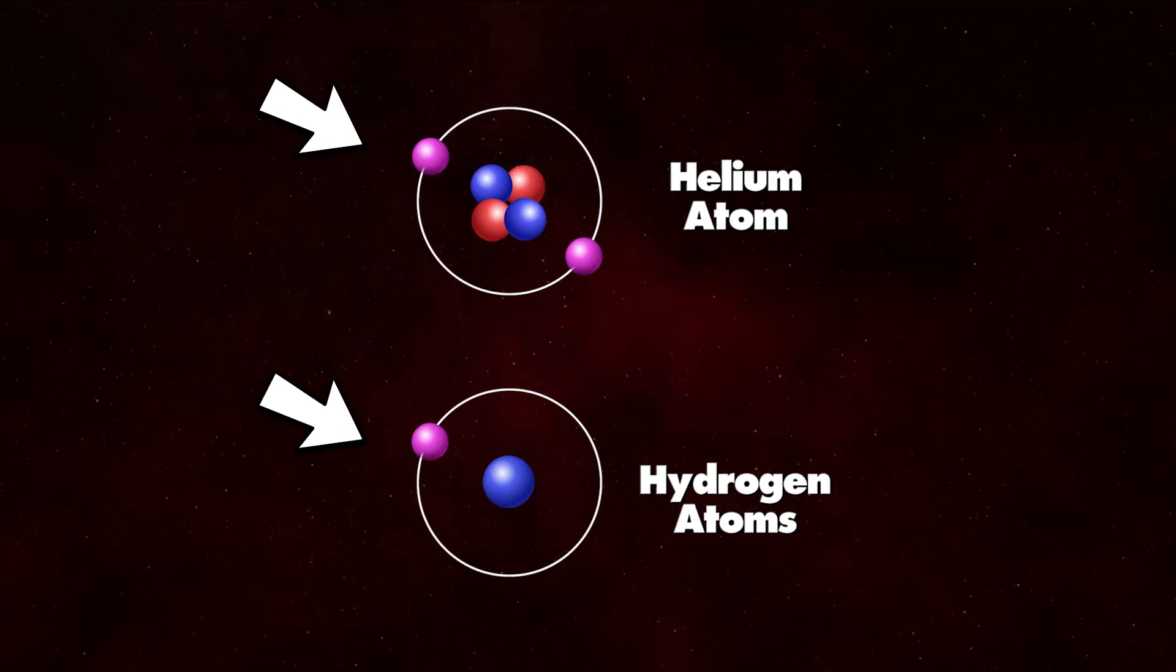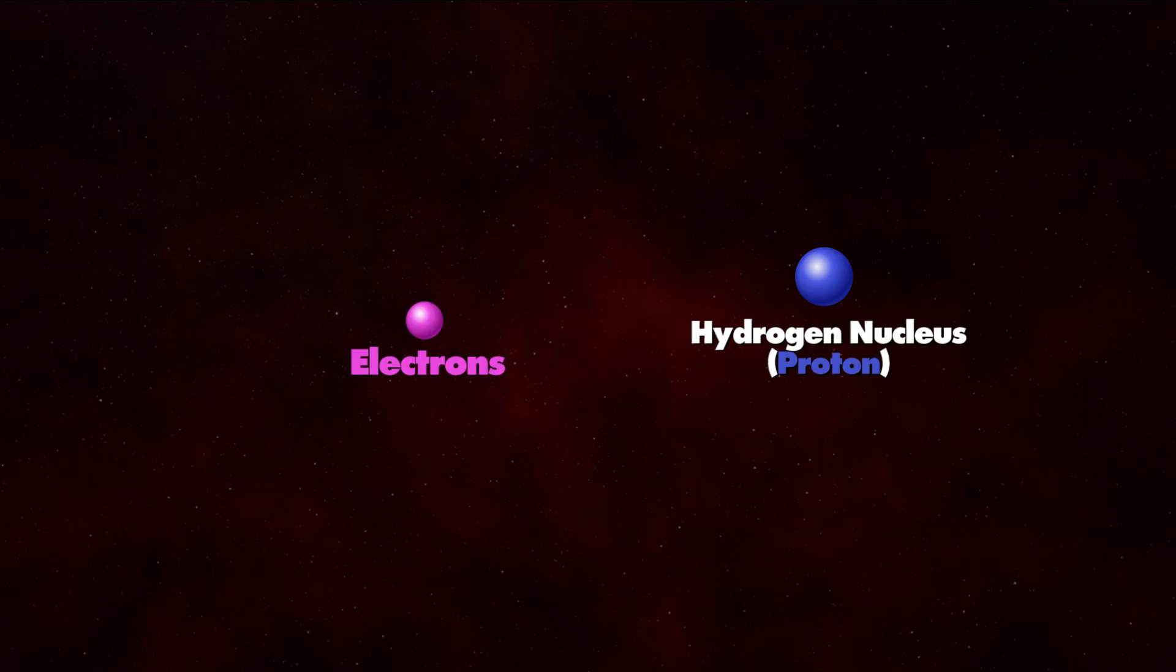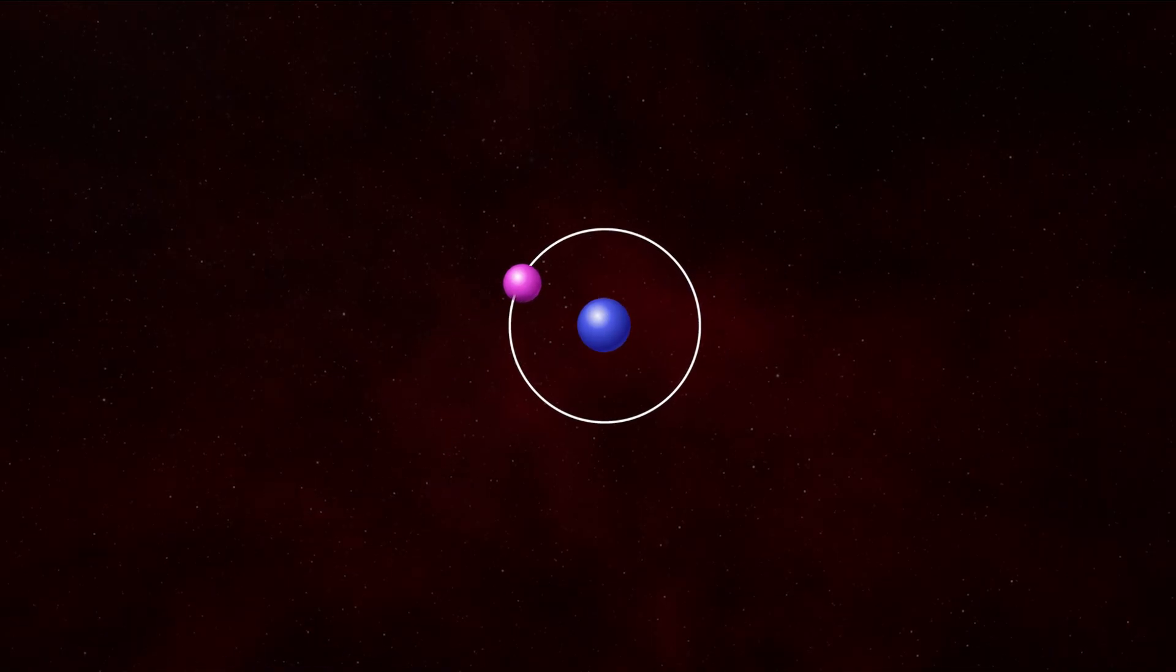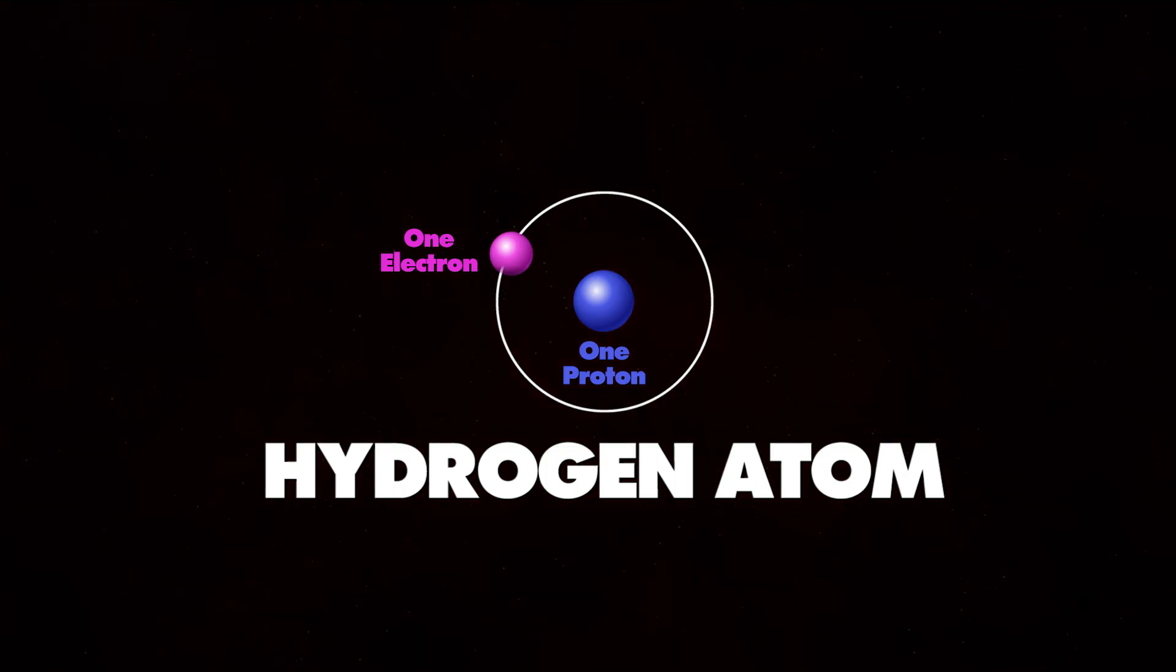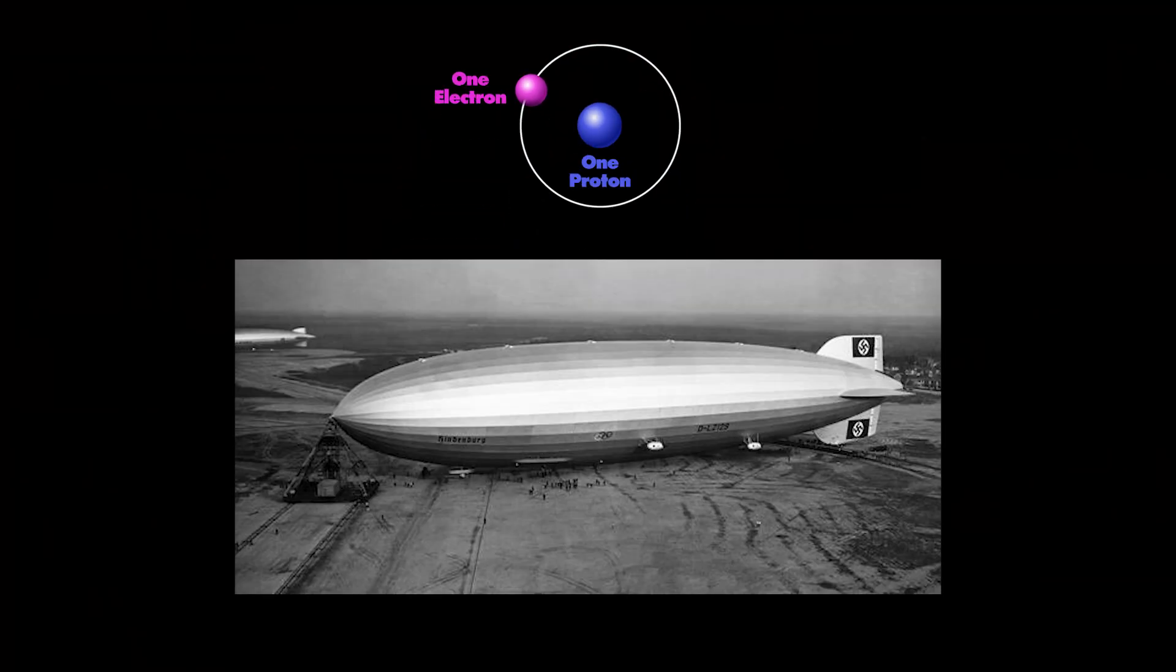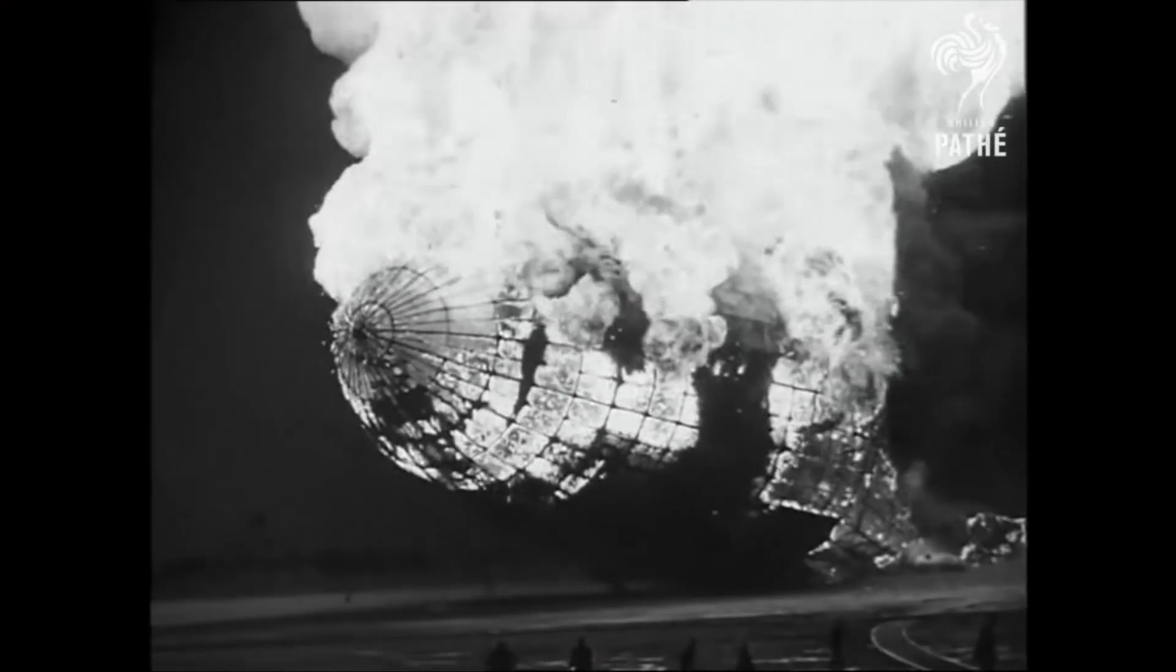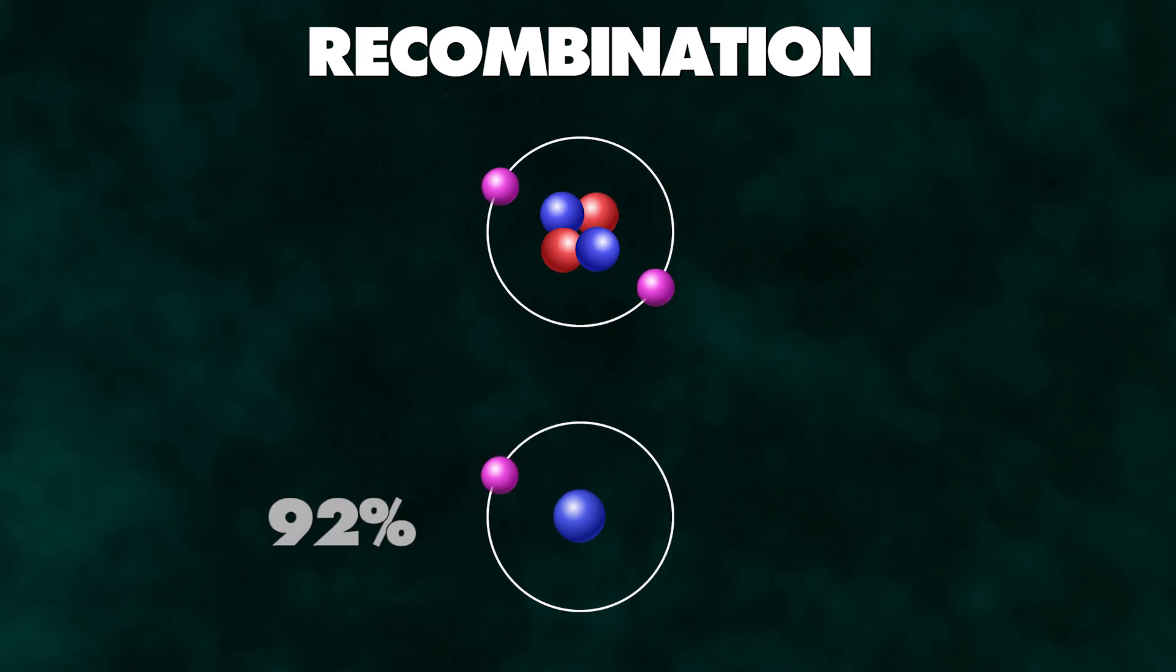Anyway, back to the atoms being made. If we take just one proton and one electron and bring them together we make the most basic atom. A hydrogen atom. Since that's all it's made up of it's an incredibly light element. Which is why we put it in blimps. I was gonna make a joke here but better not. To be more specific 92% of the atoms made during recombination were hydrogen.